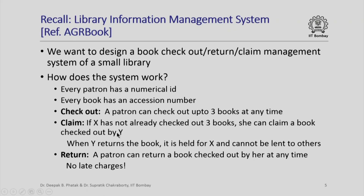If a patron X has not already checked out three books, then she is allowed to claim one book that is already checked out by some other patron Y. What this means is that when Y returns the book, it would be held for X and would not be lent out to others. A patron can also return a book she had checked out earlier, and this being a benevolent library, there were no late charges. We observed that there were two key entities participating in the library system: the patron entity and the book entity, and all operations were basically interactions between these two entities.